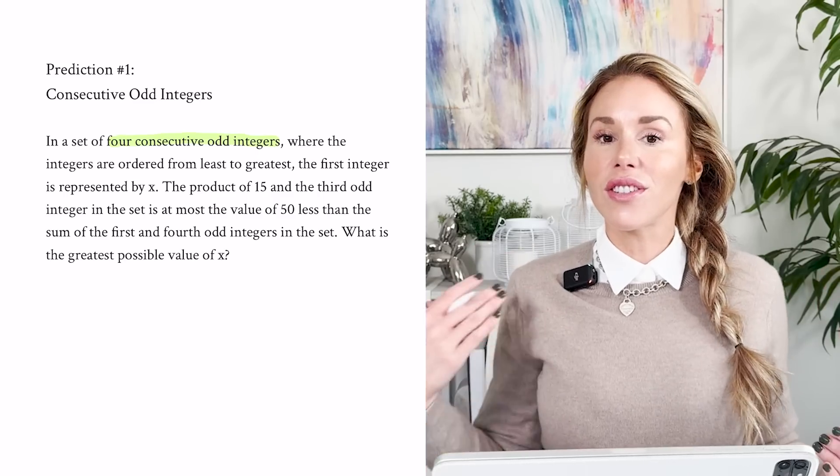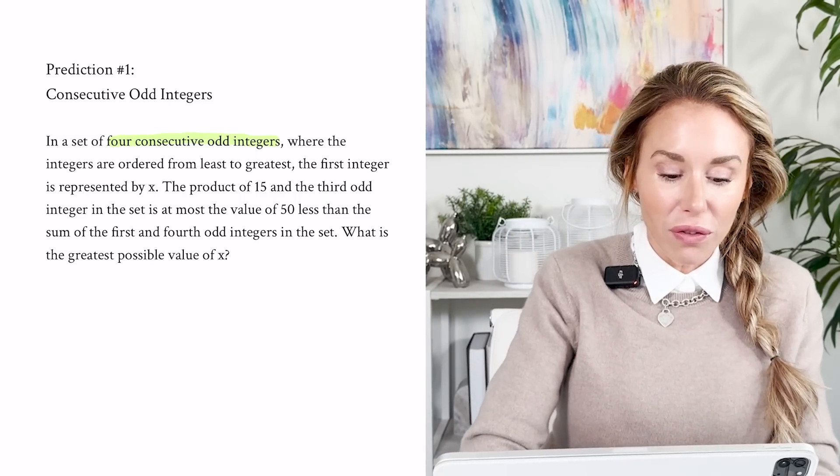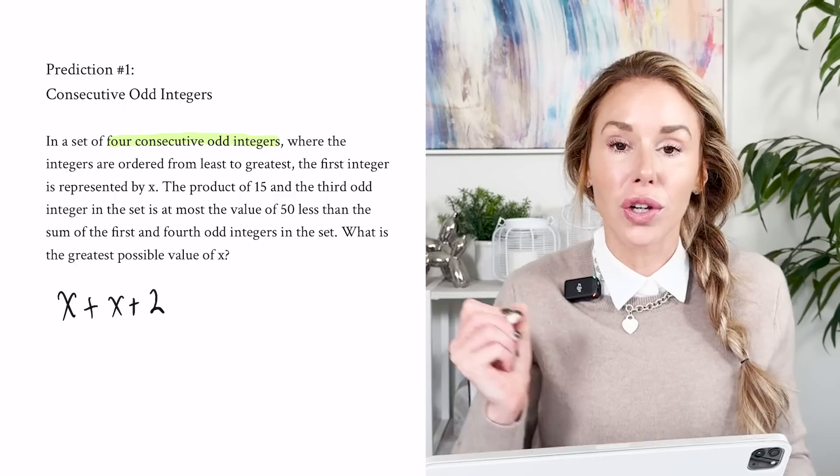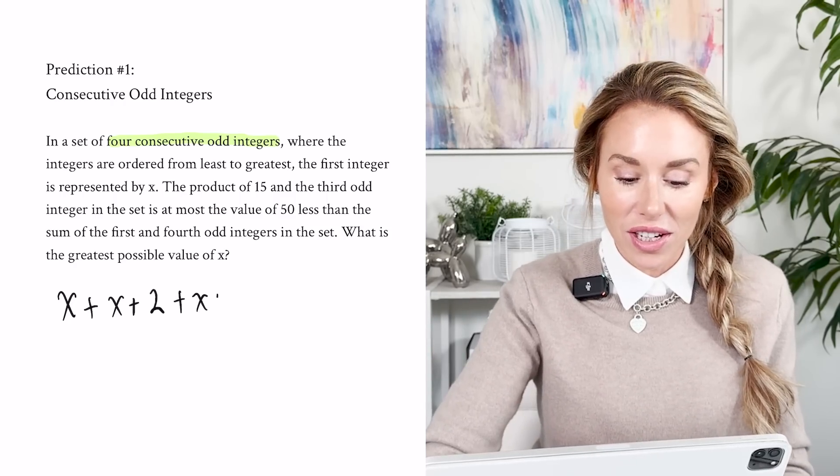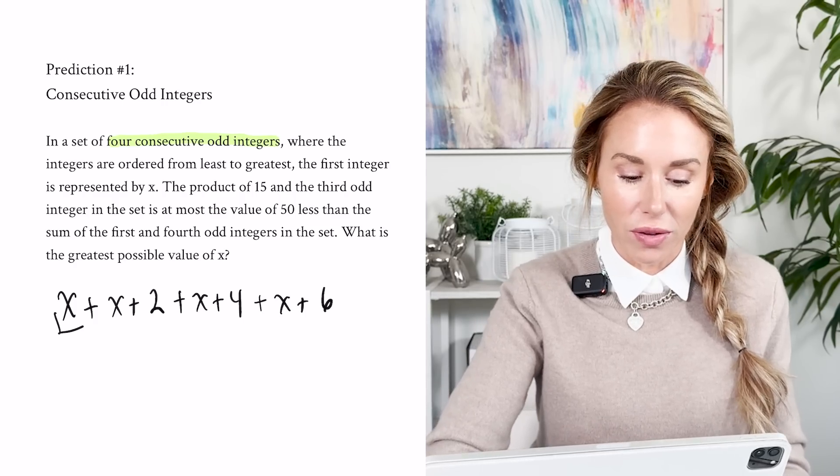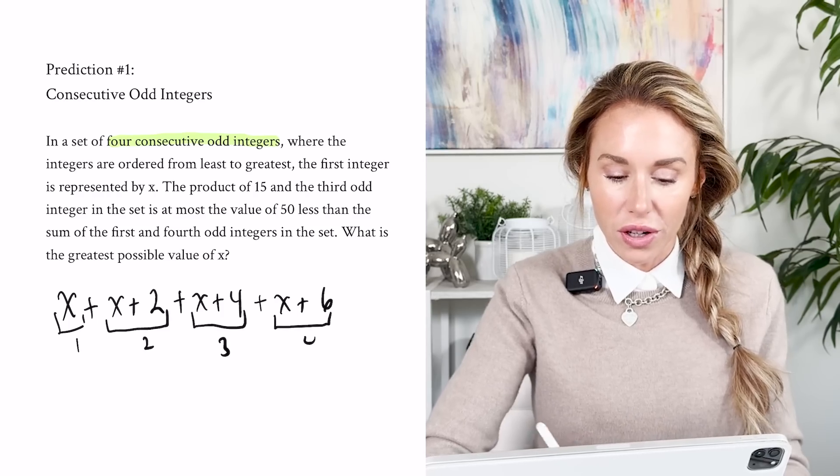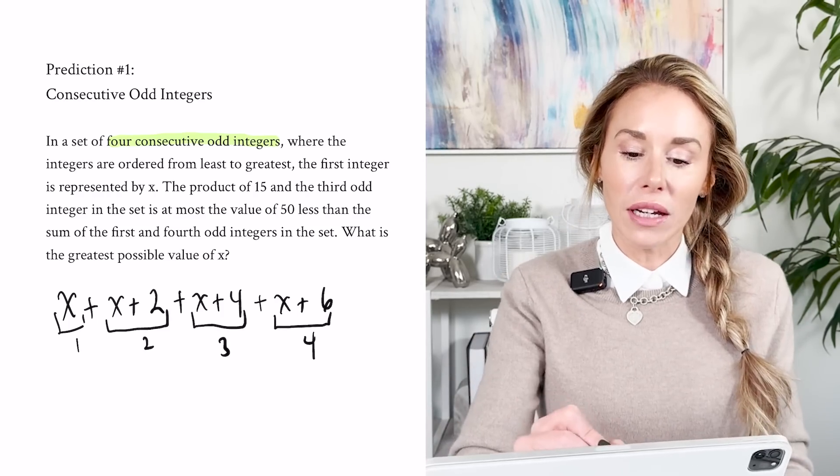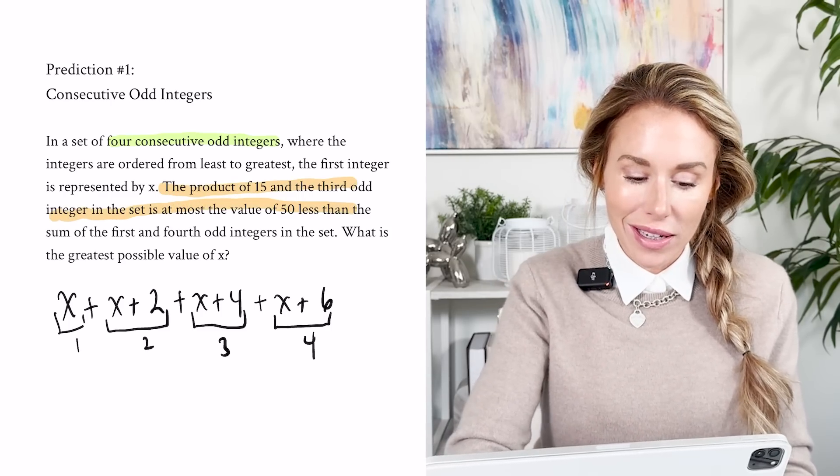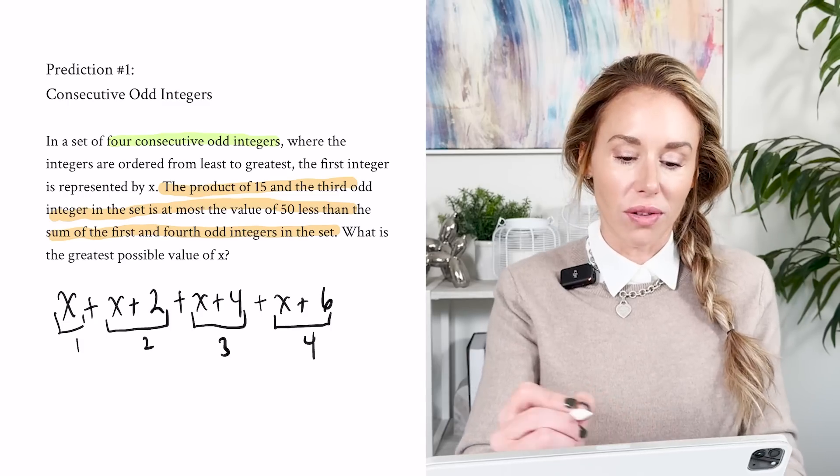Well, first off, if we're talking about consecutive odd integers, remember odd integers skip one every time. So it goes three, five, seven. So when you set it up, if the first integer is x, the next integer has to be x plus two. Okay, then the next one after that is going to be x plus four. And then the next one after that is going to be x plus six. So here's our first, here's our second number, here's our third number, here's our fourth number.